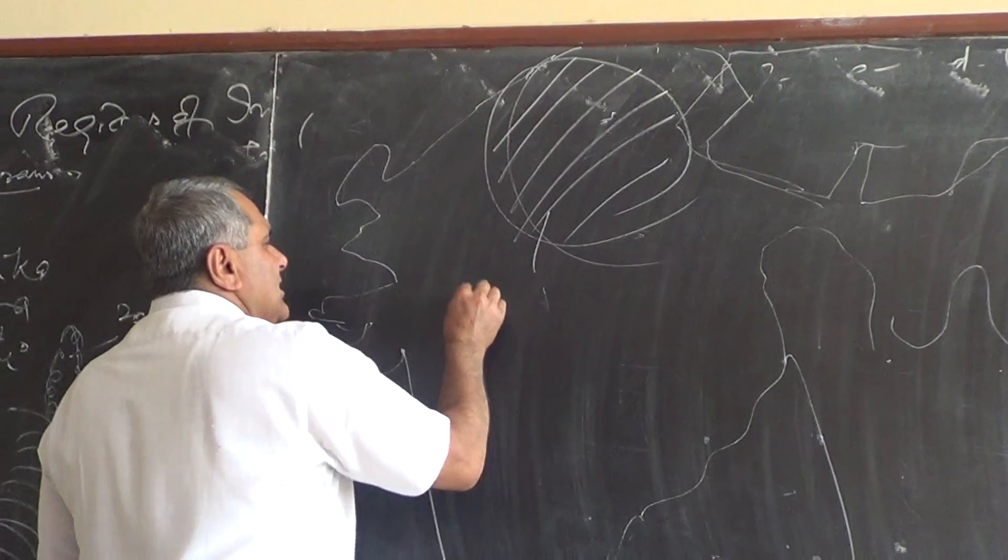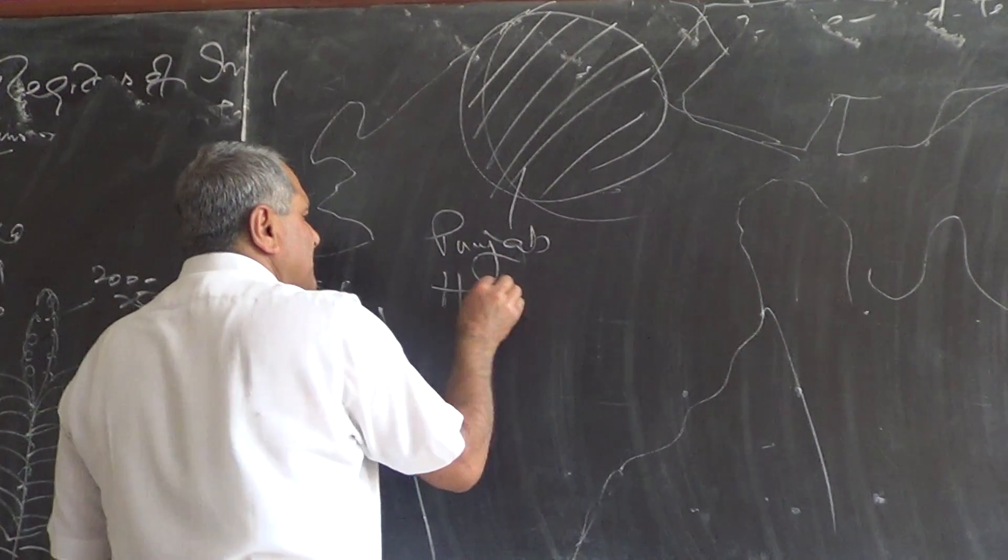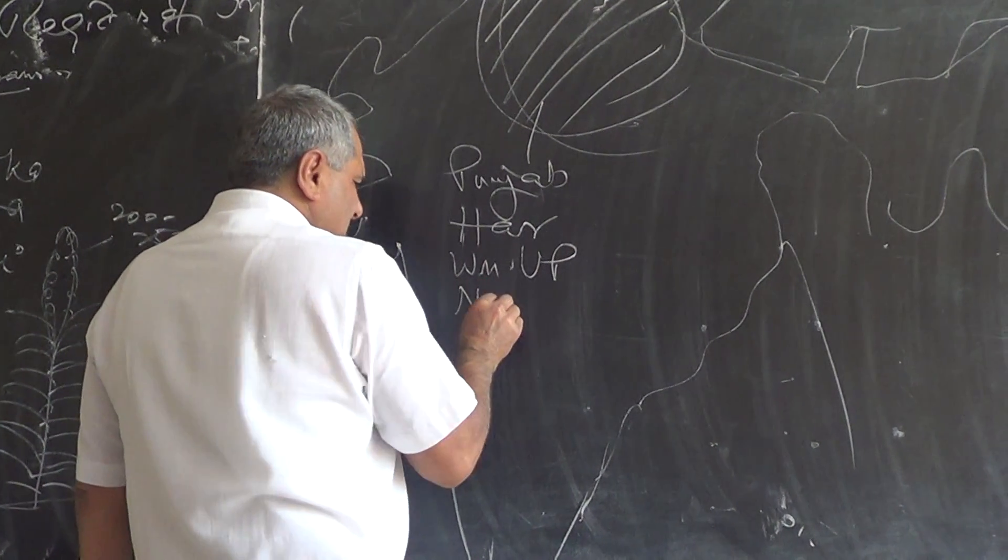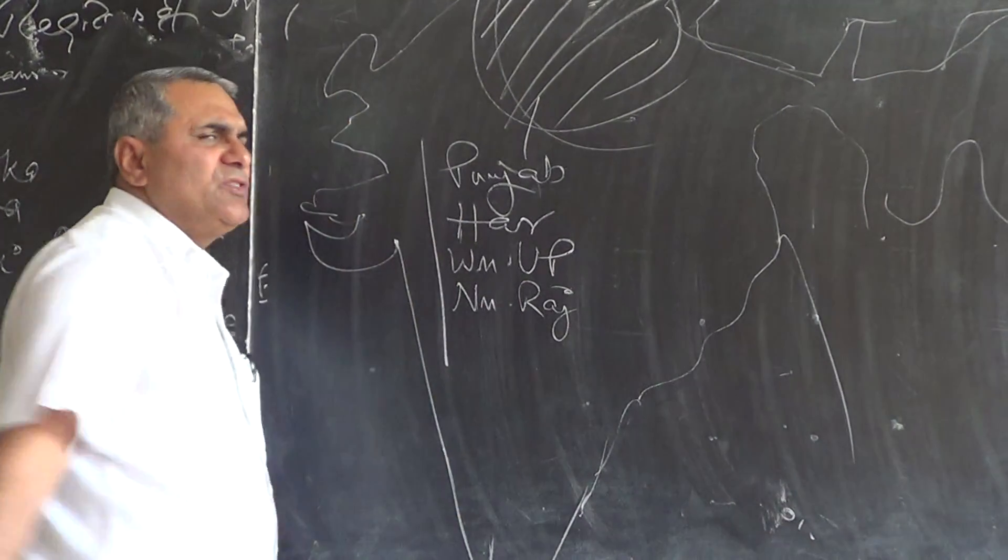It is basically Punjab, Haryana, Western UP, Northern Rajasthan. This is the core area of the wheat.